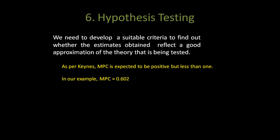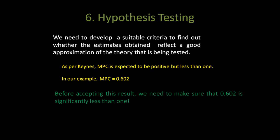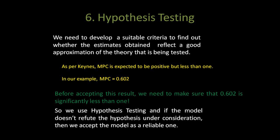We had taken the Keynes consumption function in which MPC was expected to be positive but less than 1. In our example MPC has turned out to be 0.602. Before accepting this result we need to make sure that 0.602 is significantly less than 1. So we use hypothesis testing and if the model does not refute the hypothesis under consideration then we accept the model as a reliable one.